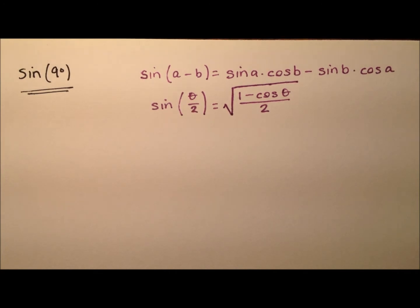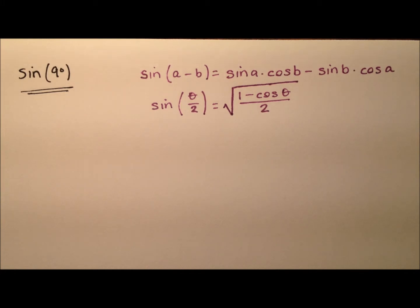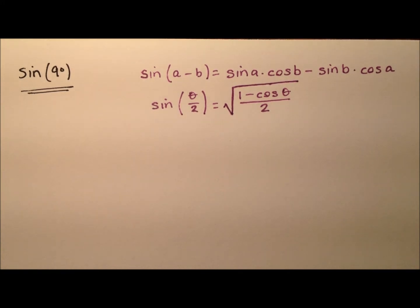In this video, I'm going to work out the exact value for the sine of 9 degrees, and I'm going to do it two different ways. Some of the trig ratios we're going to use I have already worked out in previous videos, and I have linked to those videos down in the video description, so be sure to check those out if you'd like to see where some of these values came from, like the sine of 36, the sine of 54, or the sine of 72 degrees.